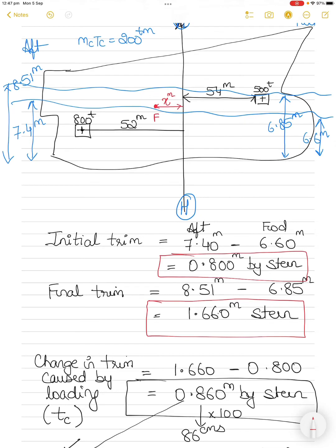With the center of rotation assumed x meters aft of H, the cargo loaded aft is at a distance of (52 − x) from the center of rotation, and we always calculate trimming moment with respect to the center of rotation — not from midships, which is just a reference point.